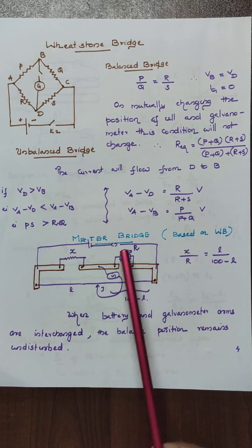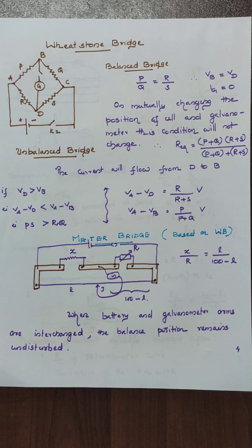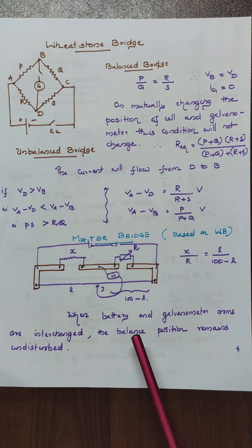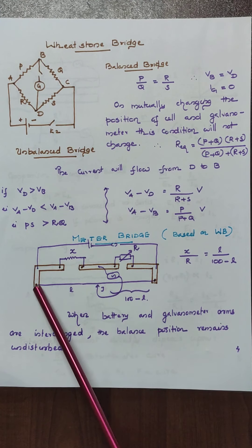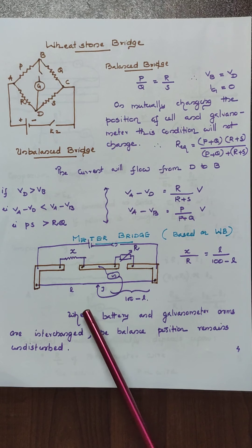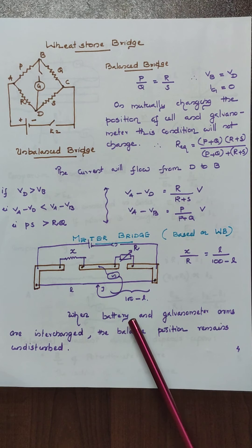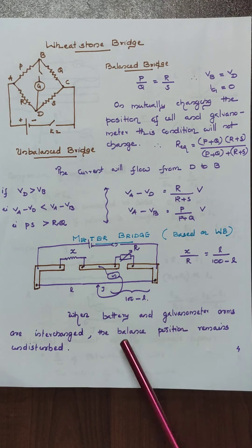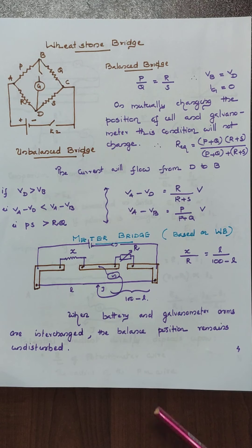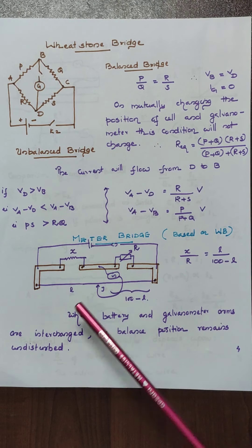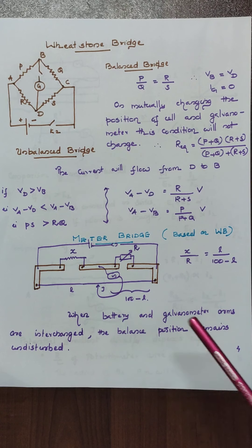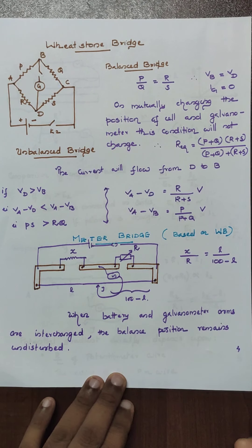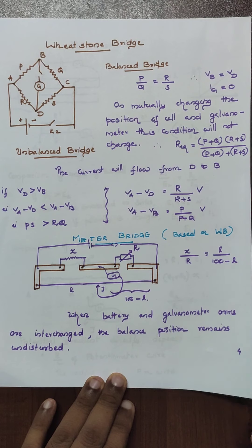Look at the meter bridge. We use the Wheatstone bridge principle: X by R equals L by 100 minus L. Here also, if we interchange the cell and the galvanometer, there is no change to the balance position. That is a very important concept.